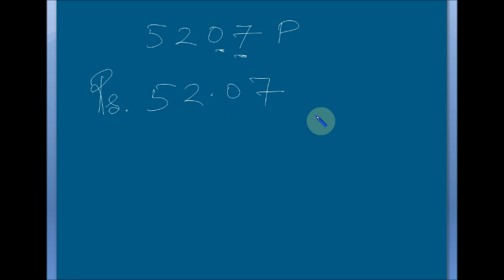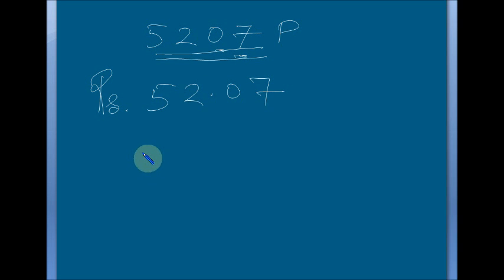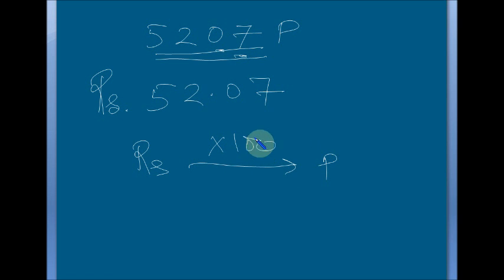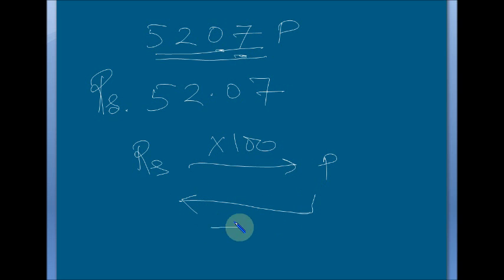Now the long method — I told you, you should know what is happening here. Actually we are dividing by 100. Why? Because going from Rupees to Paise, you multiply by 100. But when you convert Paise into Rupees, you have to divide by 100. This is the mathematical concept.